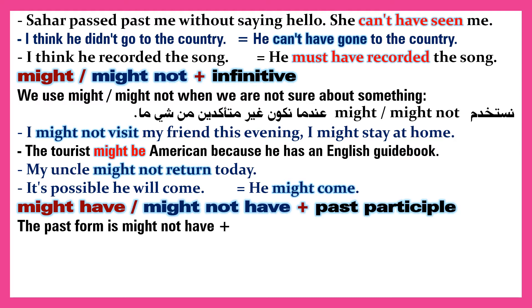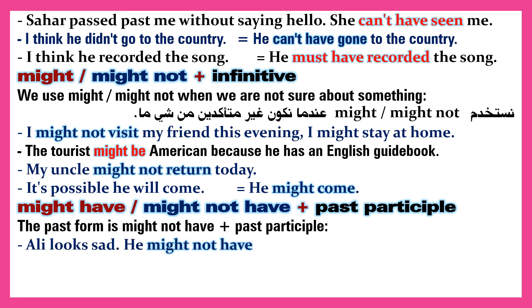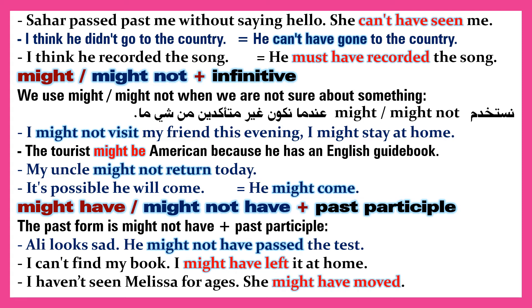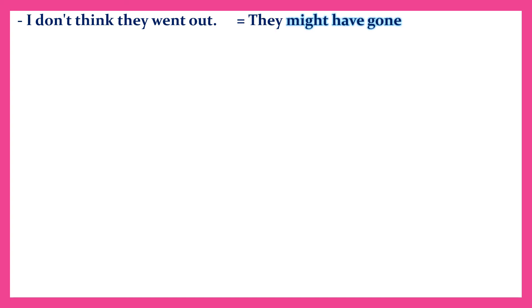Might have, might not have and past participle. The past form is 'might not have' and past participle. Ali looks sad — he might not have passed the test. I can't find my book — I might have left it at home. I haven't seen Melissa for ages — she might have moved. 'I don't think they went out' equals 'they might have gone out.'